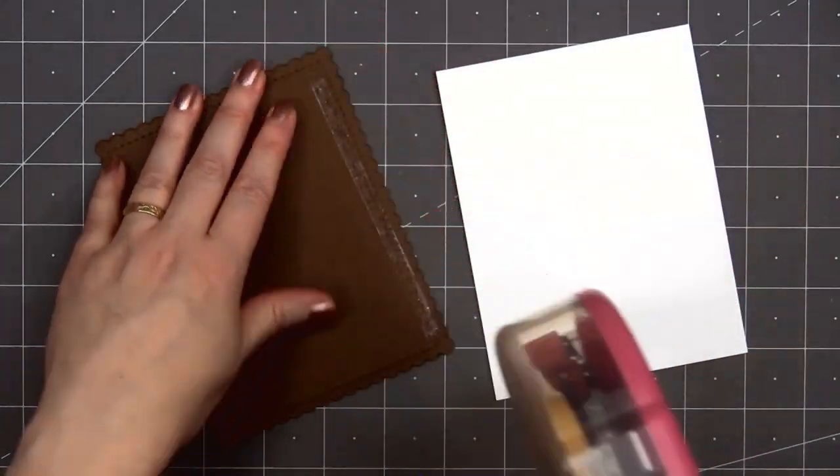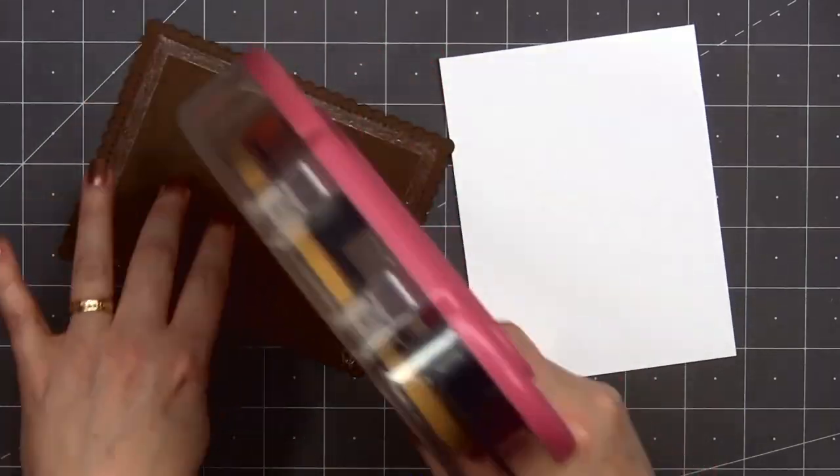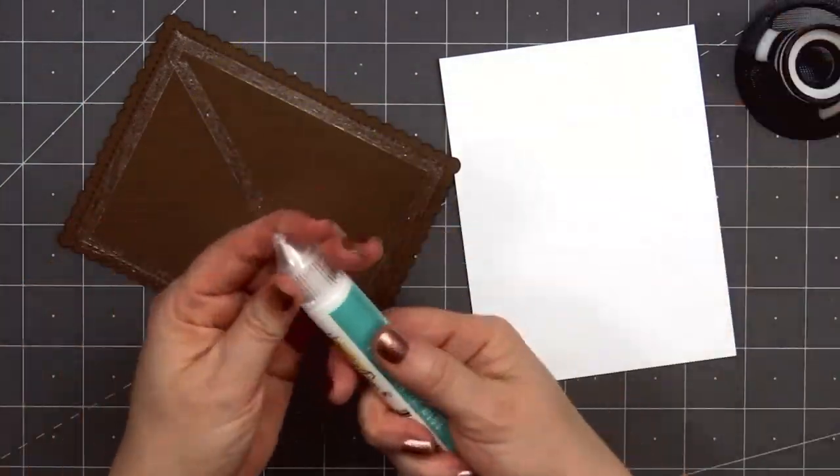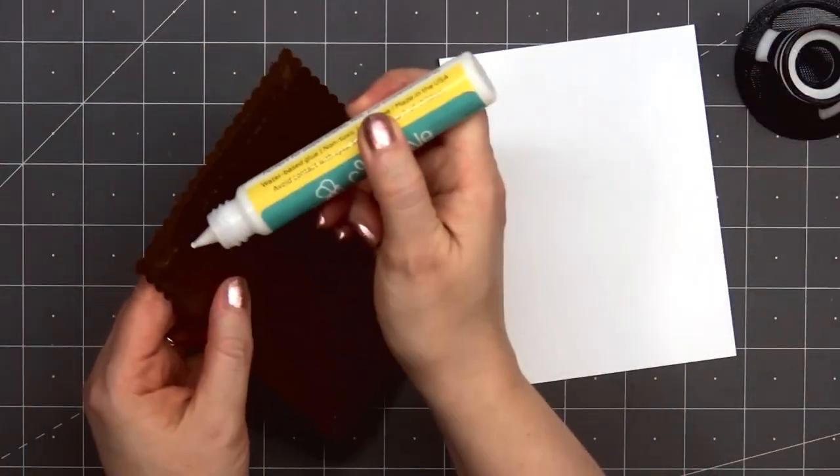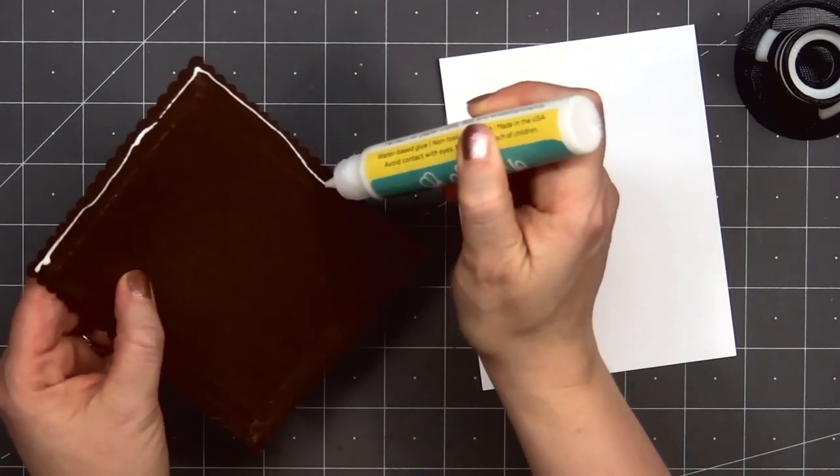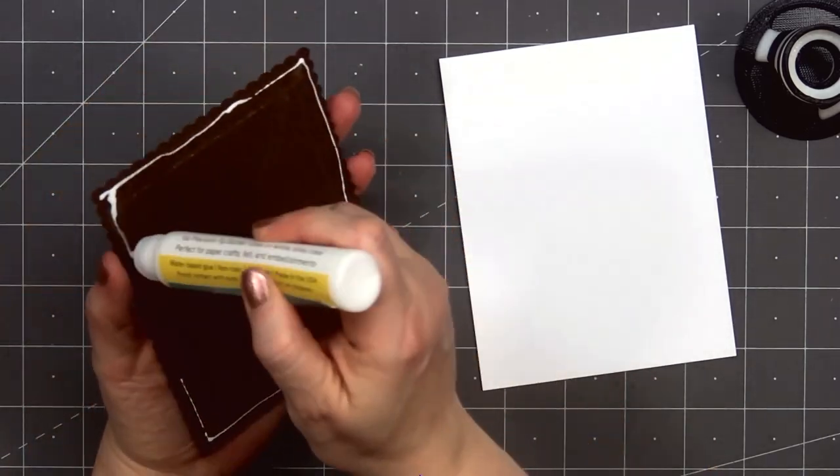Next I'll add my card front onto a card base. I'll use some ATG tape and also a little bit of liquid adhesive since it does have that stitched edge. I want to make sure it lays nice and flat.